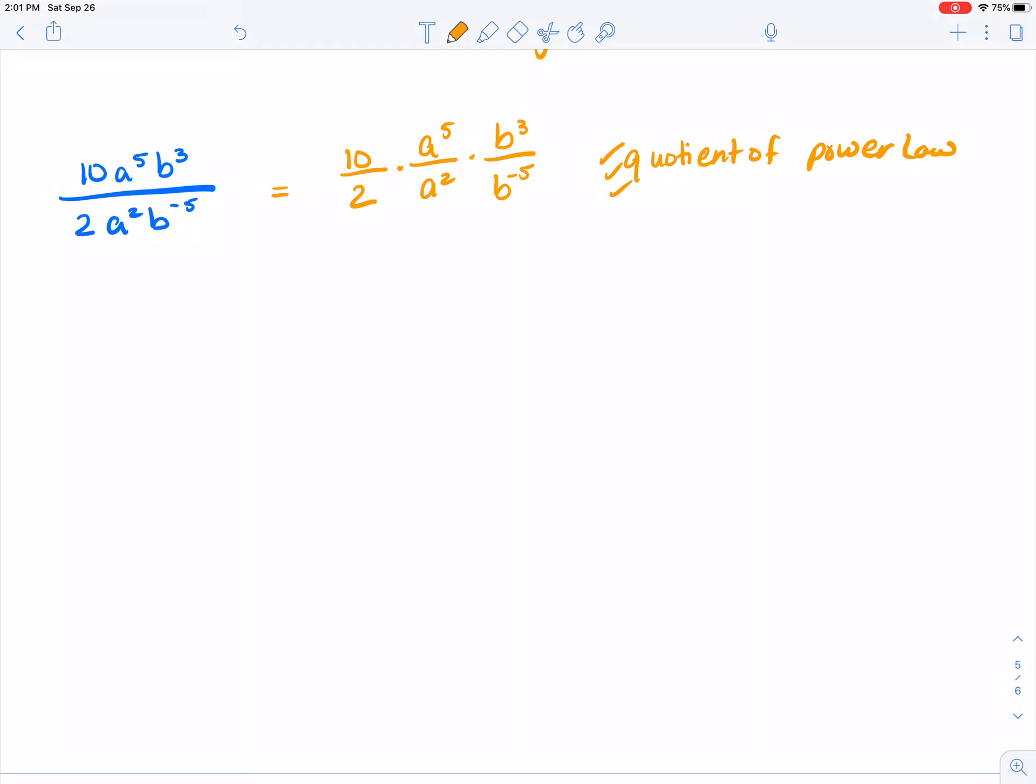I can simplify 10 divided by 2, that equals 5, and I can write a to the 5 minus 2 and b to the 3 minus minus 5. Remember I have a negative 5 on the bottom, so I have to keep that with my 5. Finish solving: it's 5 times a to the 3 and b to the 8.